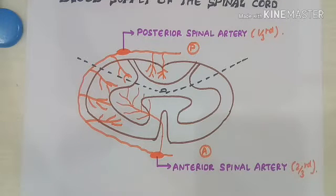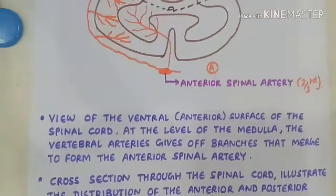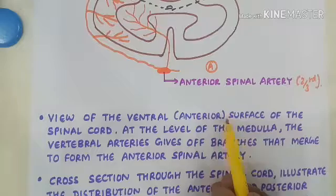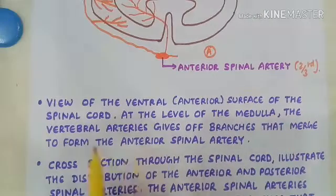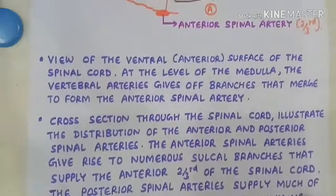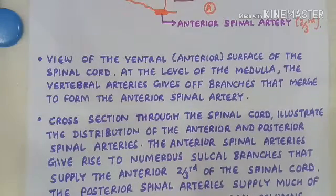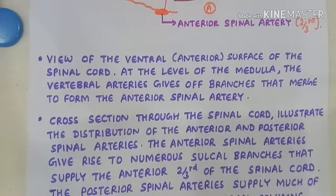Looking at the transverse section of the spinal cord — the view of the ventral or anterior surface at the level of the medulla oblongata — the vertebral arteries give off branches that merge to form the anterior spinal artery. This cross section illustrates the distribution of the anterior and posterior spinal arteries.